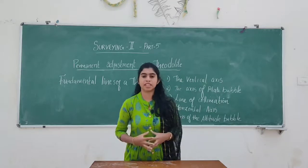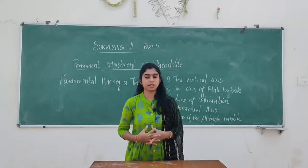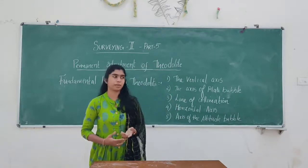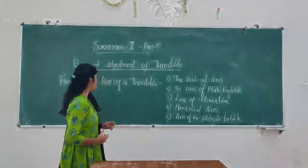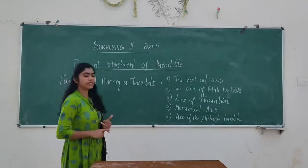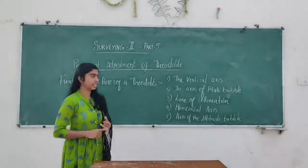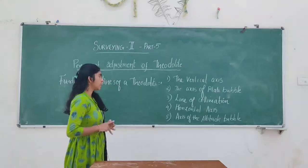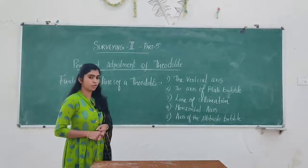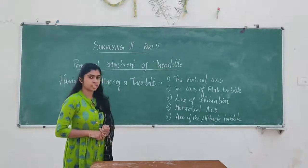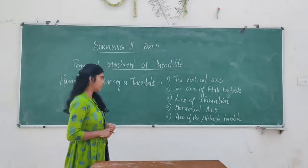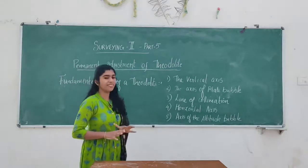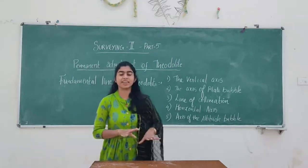Theodolite has many fundamental lines and axes. What are the fundamental lines and axes? It has a vertical axis, then axis of plate bubbles, then line of collimation, horizontal axis, and axis of altitude bubble. Theodolite has five axes and lines.